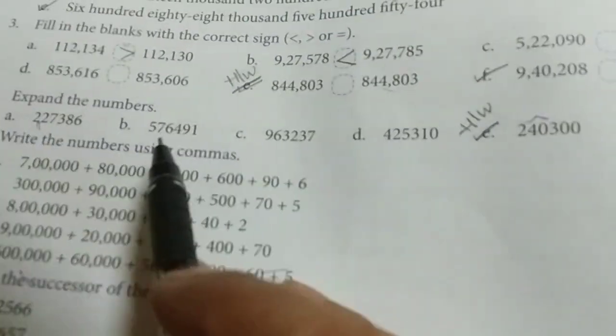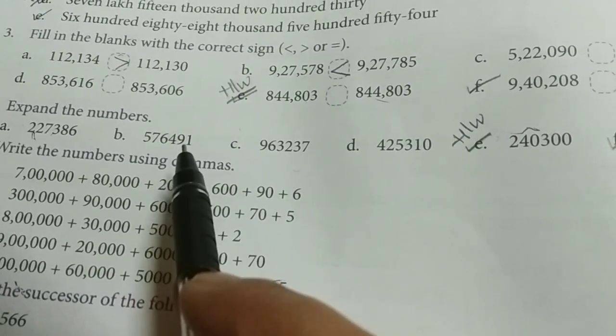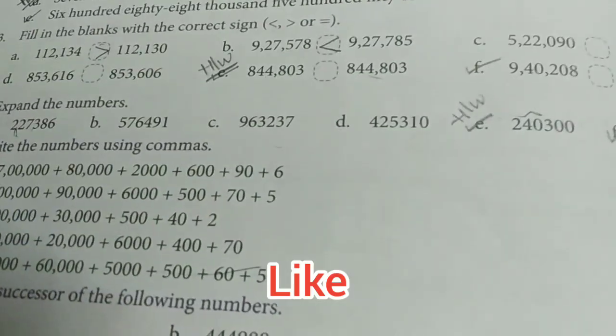What is the second one? 5, 7, 6, 4, 9, 1. How to give the periods for this?